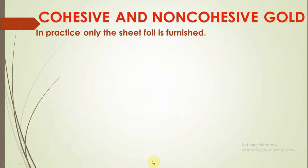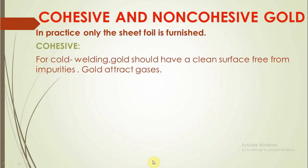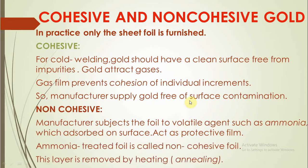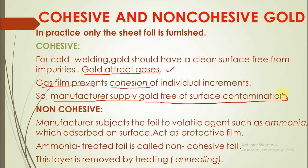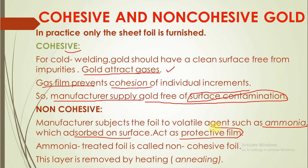Cohesive and non-cohesive gold: in practice, only sheet foil is furnished. The difference between cohesive and non-cohesive gold is just the presence of an external surface layer. Gold attracts gases towards it, and a gas film produced on its surface prevents cohesion of individual increments. To overcome this, manufacturers supply gold free of surface contamination — called cohesive gold. Manufacturers apply ammonia over the surface of gold as a protective film; that ammonia-treated foil is called non-cohesive gold, and this layer is removed by heating.